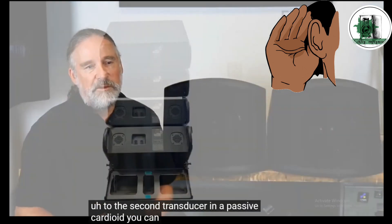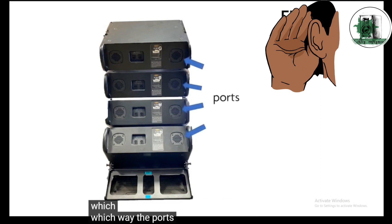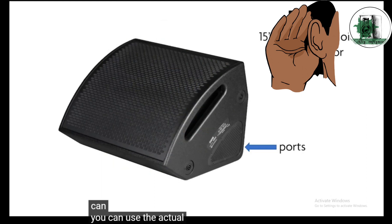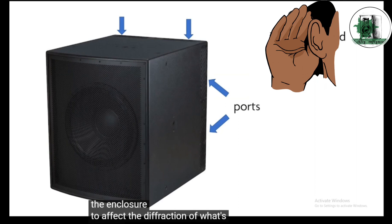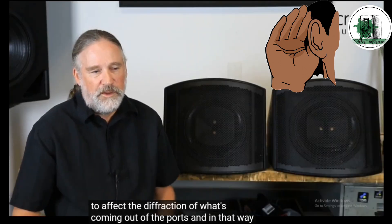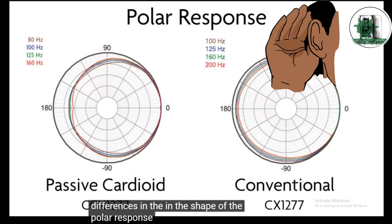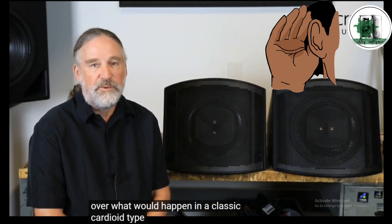In a passive cardioid, you can adjust the position of the ports, which way the ports are facing, and you can use the presence of the enclosure to affect the diffraction of what's coming out of the ports. In that way, you get differences in the shape of the polar response. What we've done in certain cases is increase the attenuation at 90 degrees off axis over what would happen in a classic cardioid arrangement.